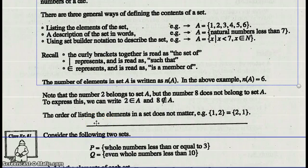The order of listing the elements in a set does not matter. For example, a set may have the elements 1 and 2. They can be listed as 1, 2 or 2, 1.